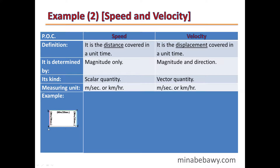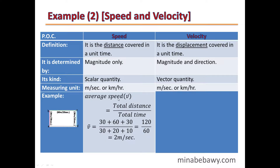Example: a car moves from A to B — 30 meters in 30 seconds; then from B to C — 60 meters in 20 seconds; then from C to D — 30 meters in 10 seconds. To calculate the average speed, we divide total distance by total time. Total distance = 30 + 60 + 30 = 120 meters. Total time = 30 + 20 + 10 = 60 seconds. Average speed = 2 meters per second.